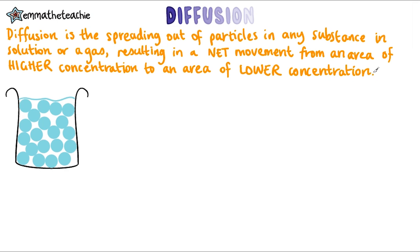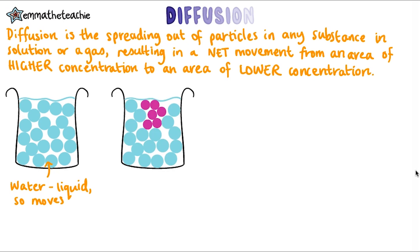Let's look at an example of diffusion. Here we've got a beaker of water. Water is a liquid so its particles can move freely around. Now let's imagine that you drop some food colouring into it. The food colouring is really concentrated in one place initially, so this area is a higher concentration. Everywhere else in the beaker is a lower concentration, since there's no food colouring there yet. So we can label it like this.